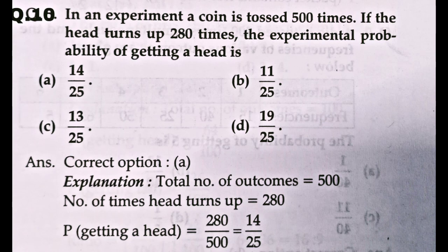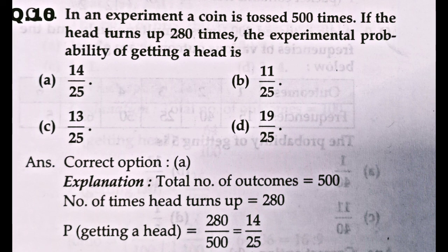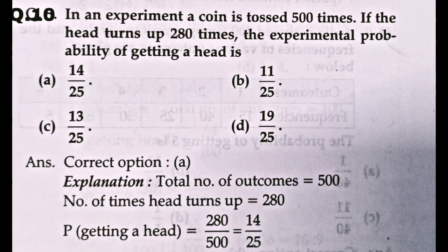Moving to question number 10. In an experiment, a coin is tossed 500 times. The head turns up 280 times. The experimental probability of getting a head is — total outcomes = 500, number of heads = 280. Probability of getting head = 280/500. Simplifying, you get 14/25. So the correct answer is A.